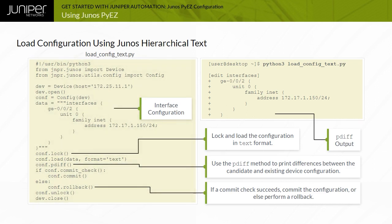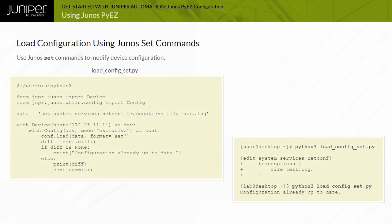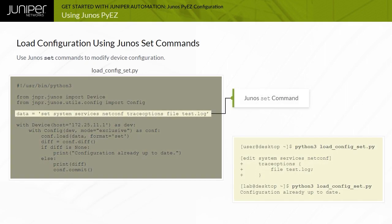Python if-else logic is used to roll back the load operation if the configuration is not supported on the device. This example script defines the data variable and associates it with a Junos CLI command.